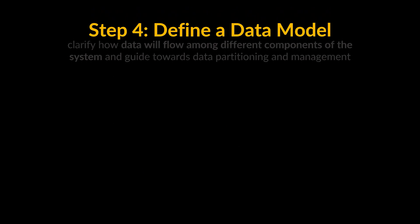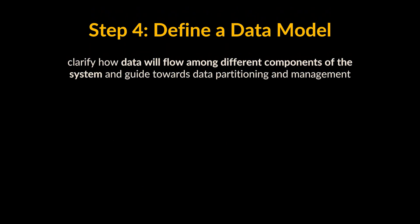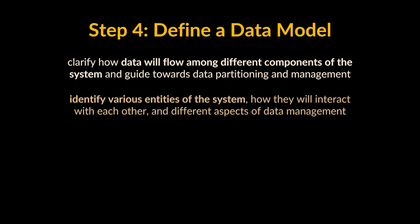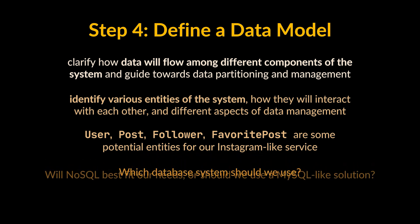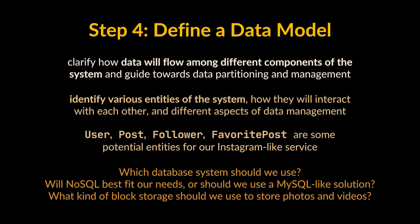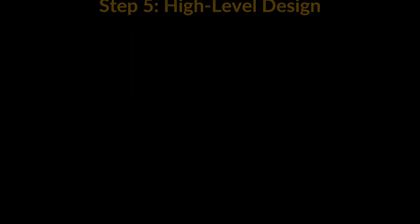Step four: define a data model. Defining the data model early will clarify how data will flow among different components of the system. It will guide towards data partitioning and management. We should identify various entities of the system, how they interact with each other, and different aspects of data management like storage, transportation, and encryption. User, post, follower, and favorite post are some potential entities for our Instagram-like service. Additional questions include: Which database system should we use? Will NoSQL like Cassandra best fit our needs, or should we use a MySQL-like solution? What kind of block storage should we use to store photos and videos?